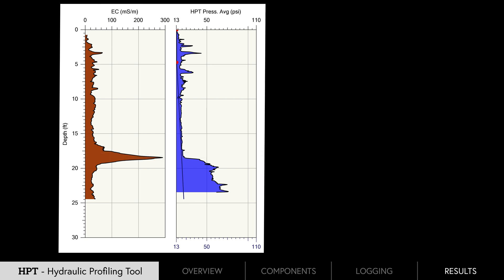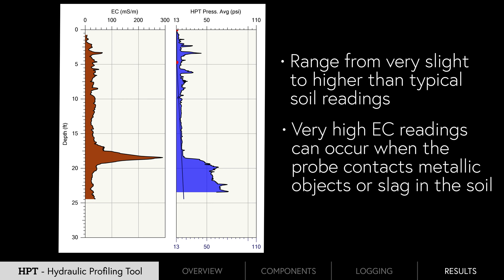High EC readings from ionic impacts can range from very slight to higher than typical soil readings. Very high EC readings can occur when the probe contacts metallic objects or slag in the soil, which will ground them out and typically result in a hard sharp spike in the EC data.